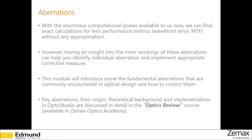With the computational power available to us right now, we can exactly calculate different lens performance metrics, and no approximation is needed. But having a deep understanding of these aberrations will definitely help you identify why your imaging system is not performing as well as you expect it to, and what measures you can take to correct them. You can find more about different kinds of aberration and their implementation in Optics Studio in our Optics Academy course titled Optics Review.